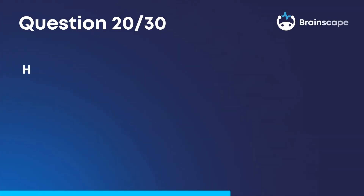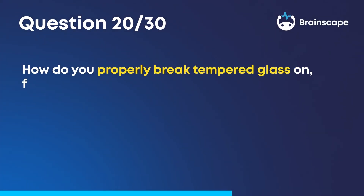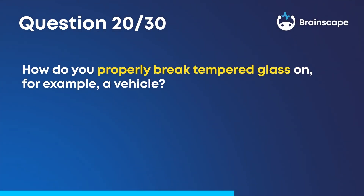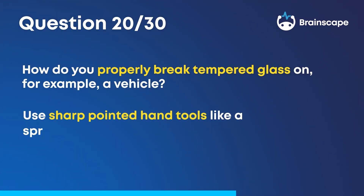Question 20. How do you properly break tempered glass on, for example, a vehicle? Use sharp pointed hand tools like a spring-loaded punch.